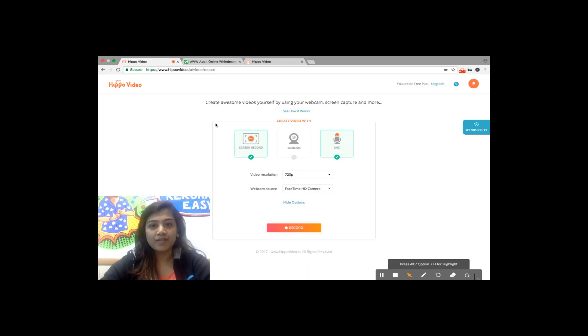Hi, today let us see how to create an instructional video with Hippo Video. To get started, you'll just have to click on the Chrome extension and select your preferred webcam and microphone settings and click on record.